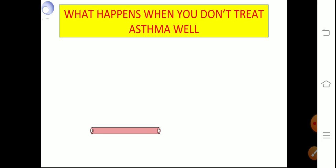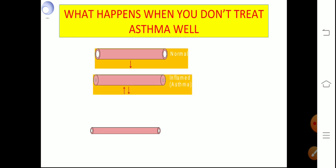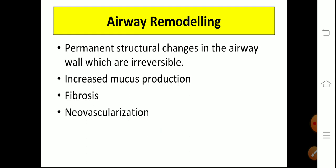When you don't treat asthma well, some bronchodilation may occur with partial treatment, but ultimately airway remodeling occurs, leading to a narrow tube. In airway remodeling, there are permanent structural changes in the airway which are irreversible — increased mucus production, fibrosis, and neovascularization — ultimately leading to lung dysfunction if asthma is not treated well.